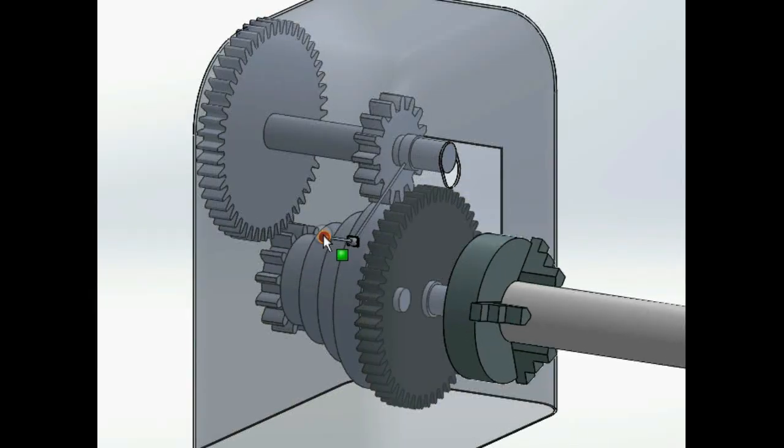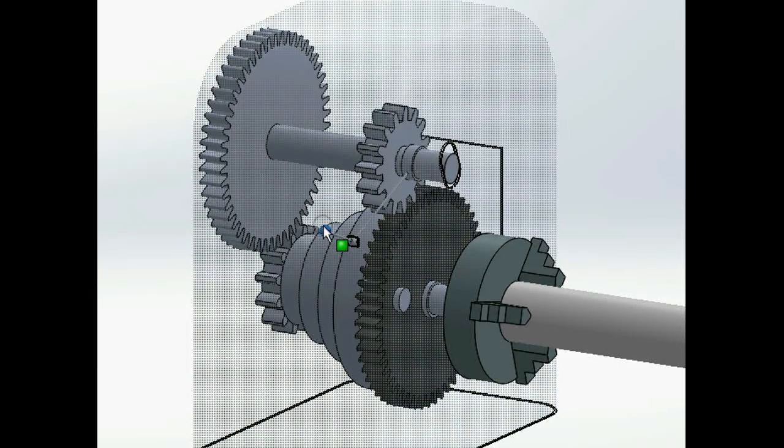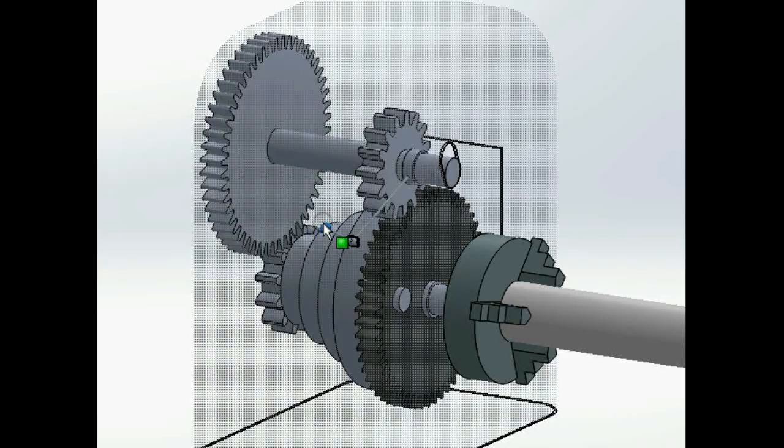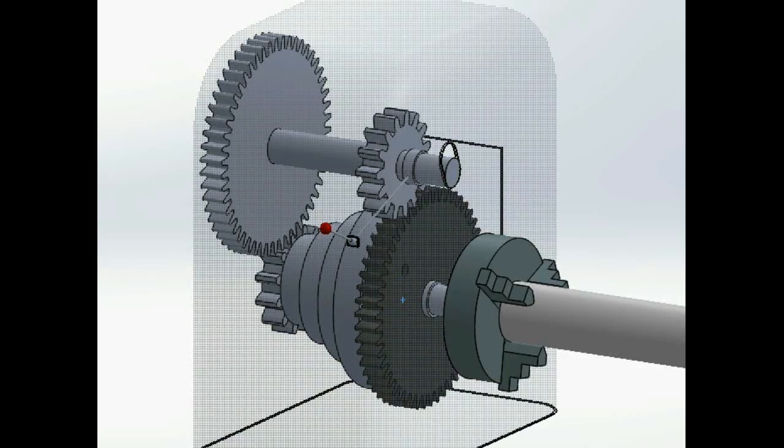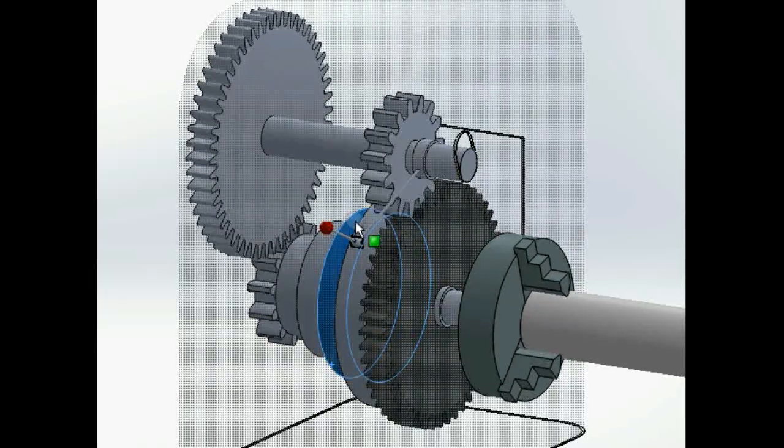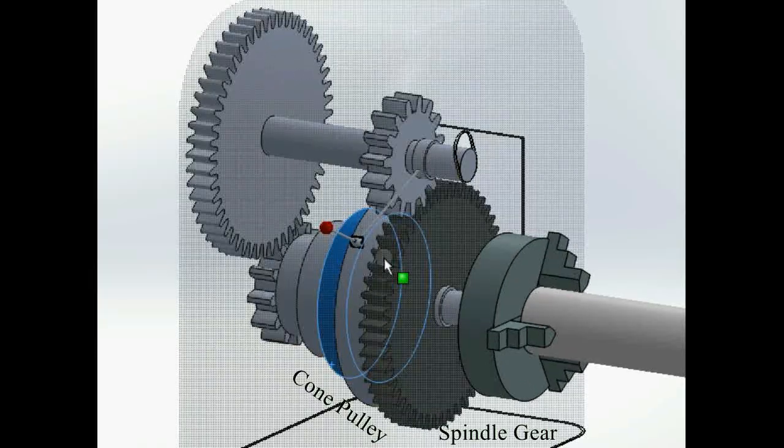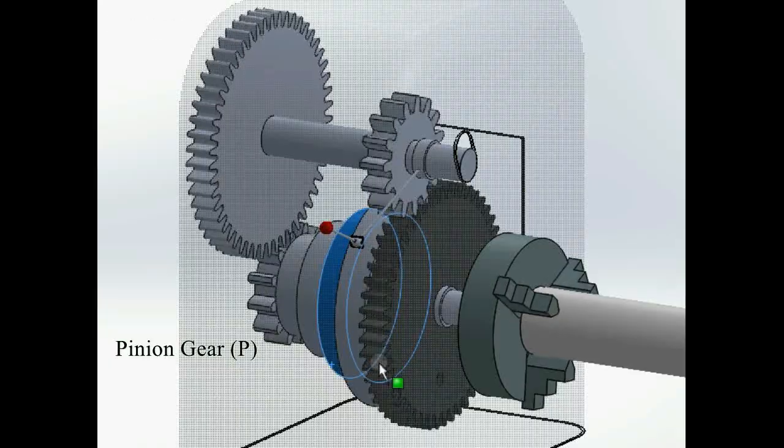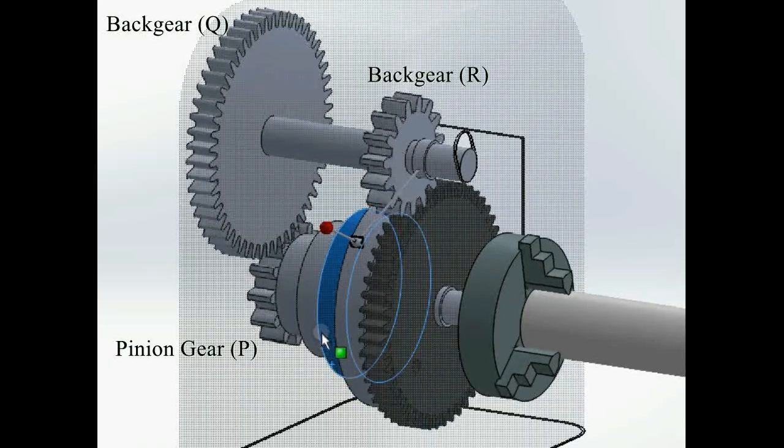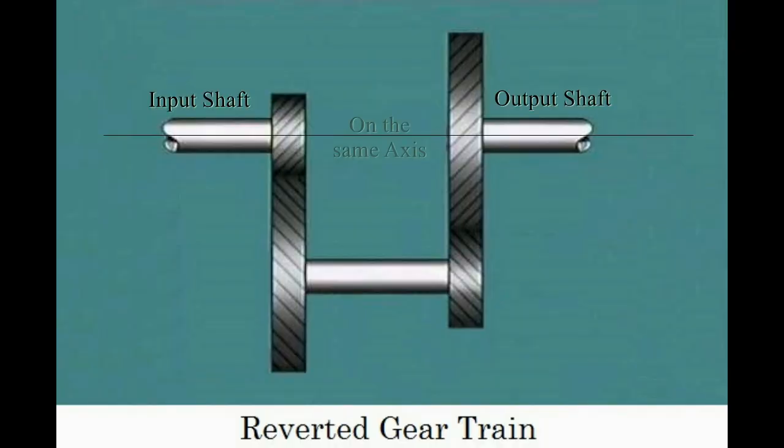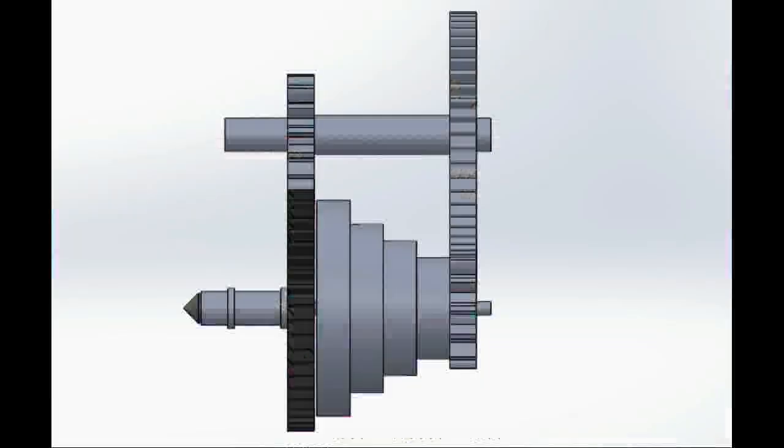For slower speeds the back gears Q and R are engaged. The pin is removed. Motion is transmitted from the cone pulley to the spindle gear via P, Q and R. Such a gear train is called a reverted gear train and the arrangement is back geared arrangement.